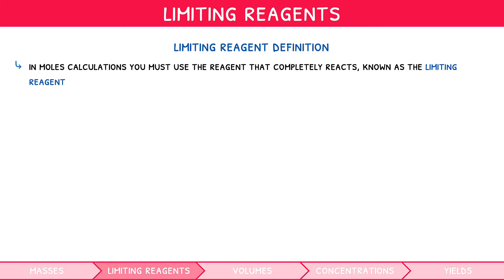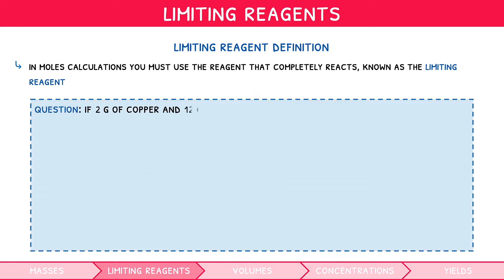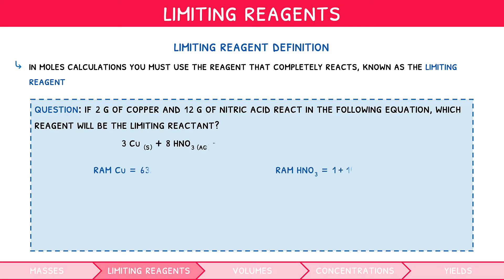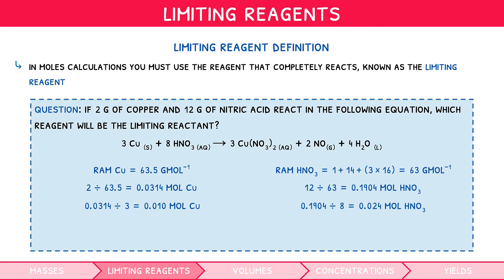Let's explore how to find the limiting reagent using a question based on the same equation as earlier. If 2 grams of copper and 12 grams of nitric acid react in the following equation, which reagent will be the limiting reactant? To calculate the limiting reagent, simply find the number of moles of both reactants, and then divide this by their coefficients so that they are in a 1 to 1 ratio. Here we can see that we have a 1 to 1 ratio of 0.010 moles of copper to 0.024 moles of nitric acid, and therefore the copper is limiting, i.e. there is less of it.